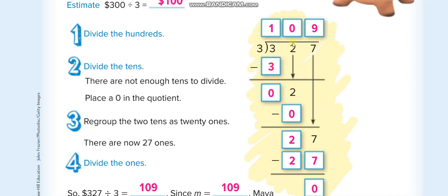Then you bring 2 down. 3 times 1 is even 3, it's less than 3. So the easiest way, what you do, just write 0 and bring another number down. It becomes 27.